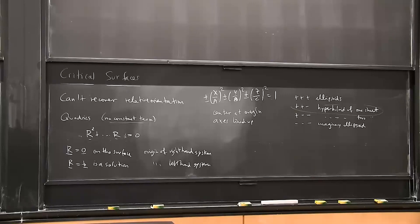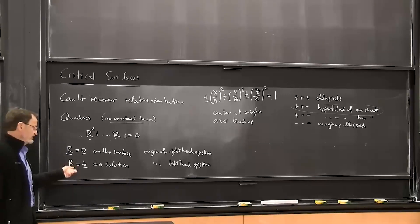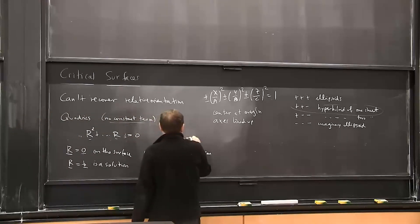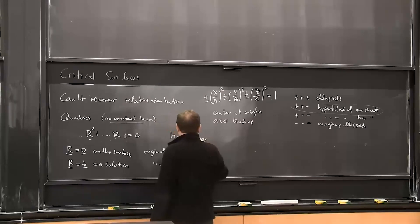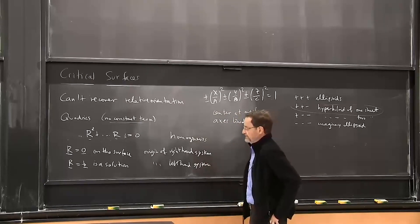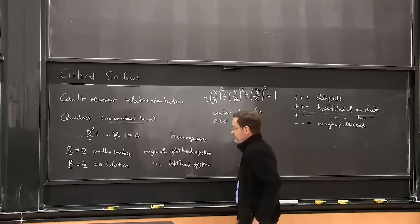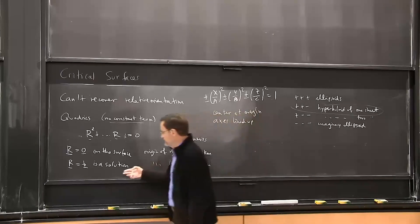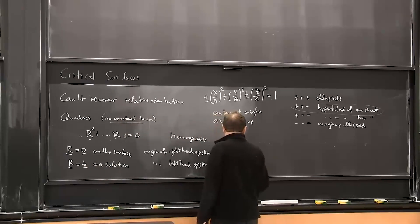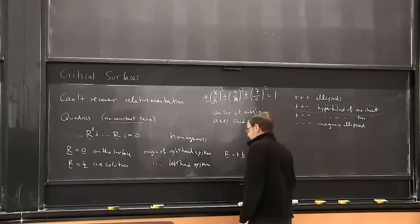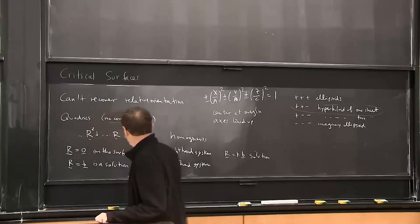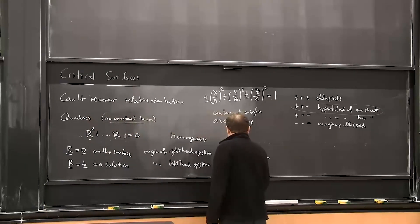This shouldn't be surprising because everything should be symmetrical between left and right. Because this is a homogeneous equation — a polynomial in r equal to zero with no constant term — there's no scaling. So r equals kb is also a solution, meaning the whole baseline lies in the surface.